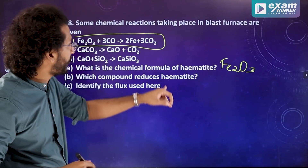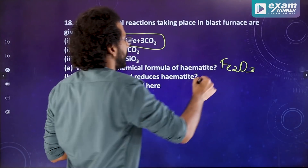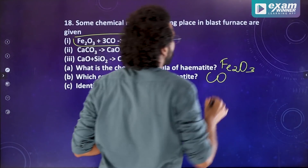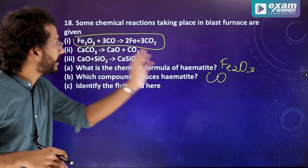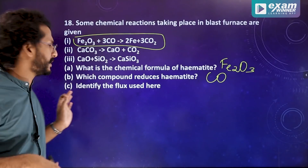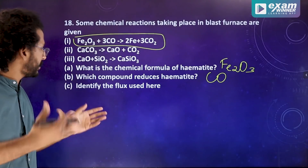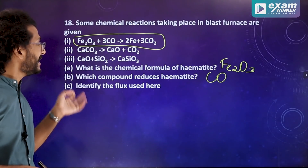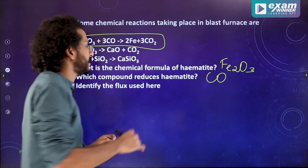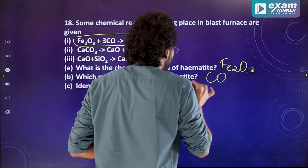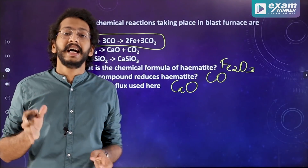Carbon monoxide is the reducing agent. The other products of the blast furnace process include calcium oxide and related compounds formed from limestone.